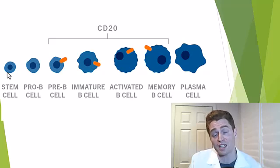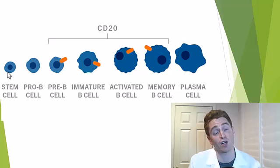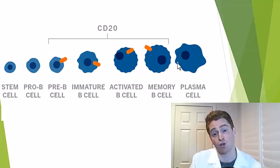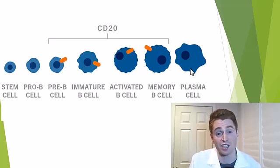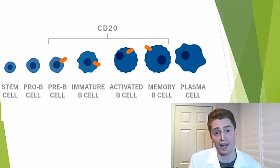Stem cells don't express CD20. They're not affected by these drugs. Hence, you can regenerate your B lymphocytes over time, though it may take a long while. Also, some B lymphocytes can turn into these larger cells called plasma cells that lose CD20 and are again immune to drugs such as Ocrevus and kesimpta, but they also make antibodies.